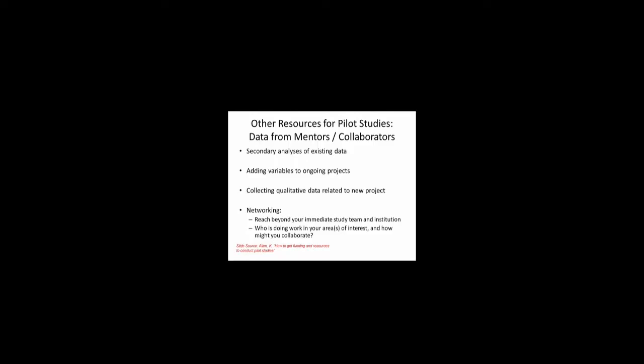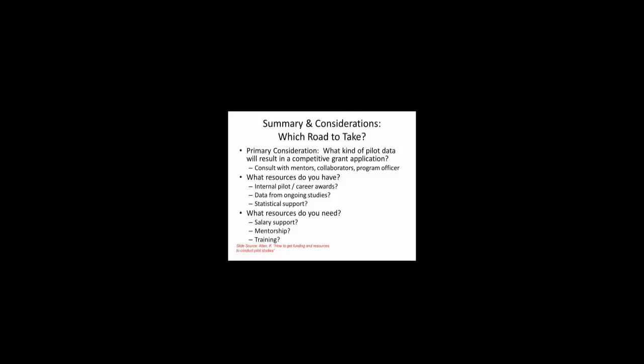Other resources include secondary analyses from other people's data, adding variables to other people's projects, collecting qualitative data related to a new project, and networking with those doing work in your area. In summary, what kind of pilot data do you need for a competitive grant application? It's important to consult with your mentors, have conversations with a program officer and your collaborators, and figure out what resources you have — internal awards, data from ongoing studies, biostatistics help. Then try to fill in those pieces and gaps.